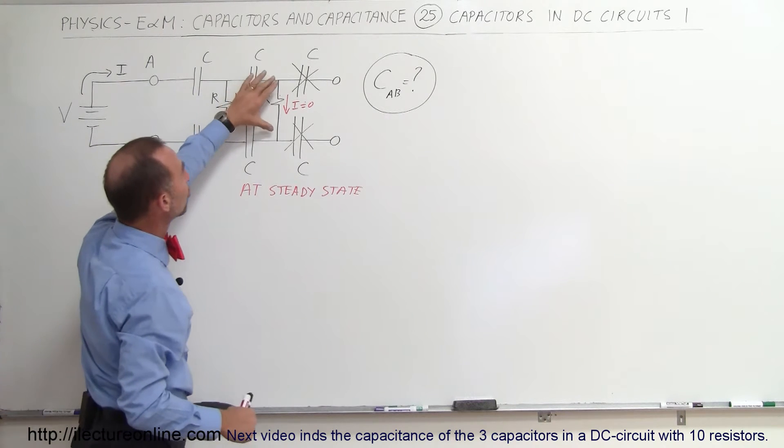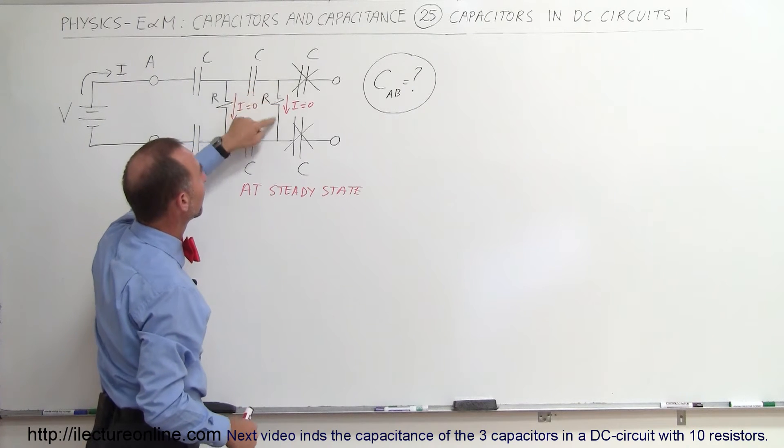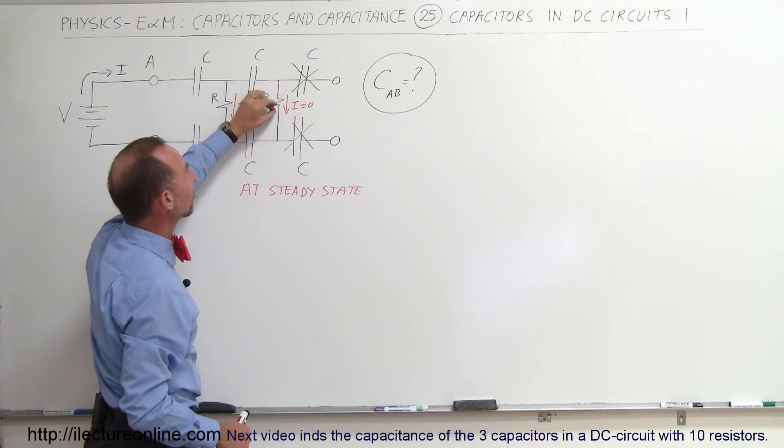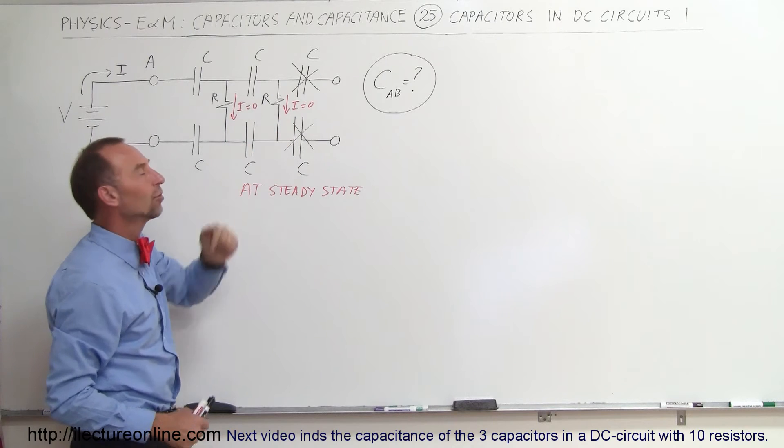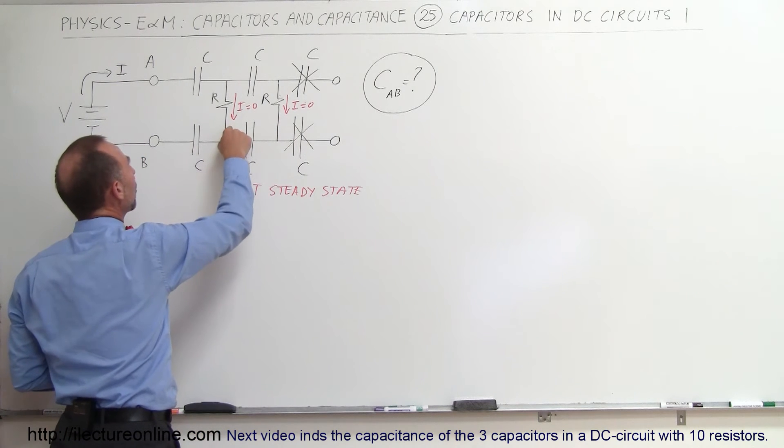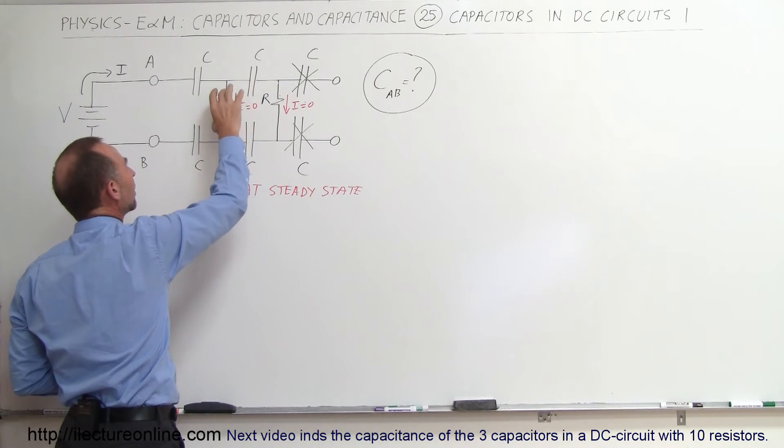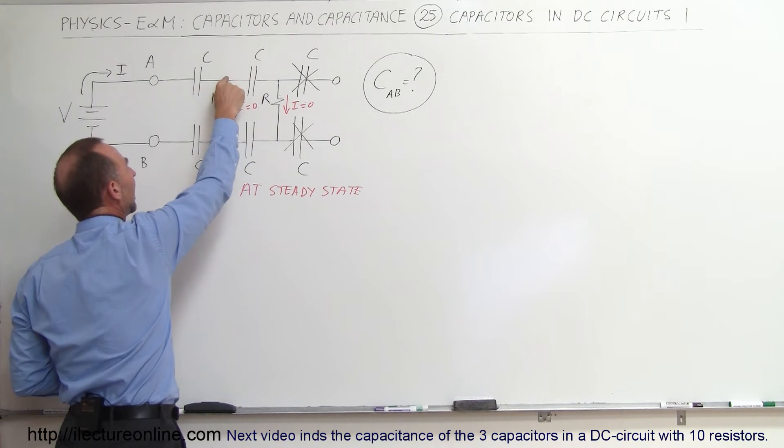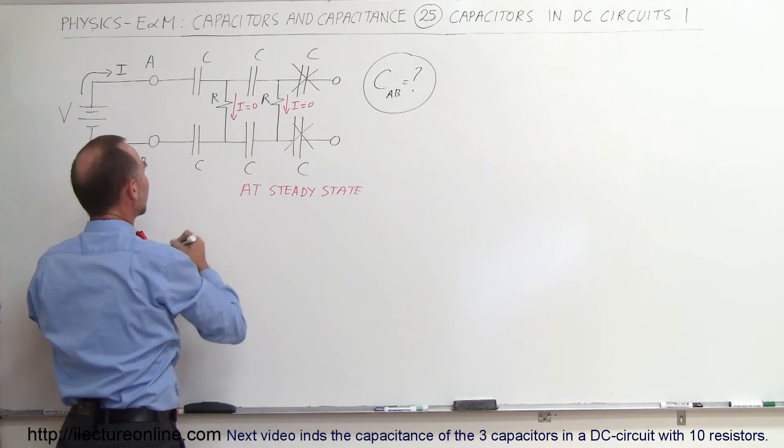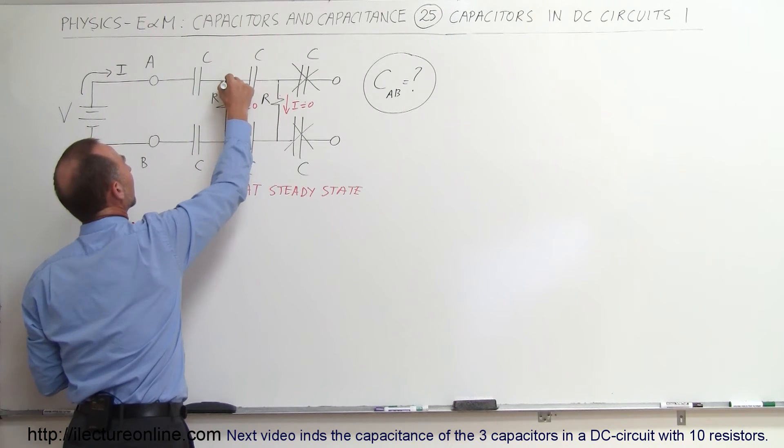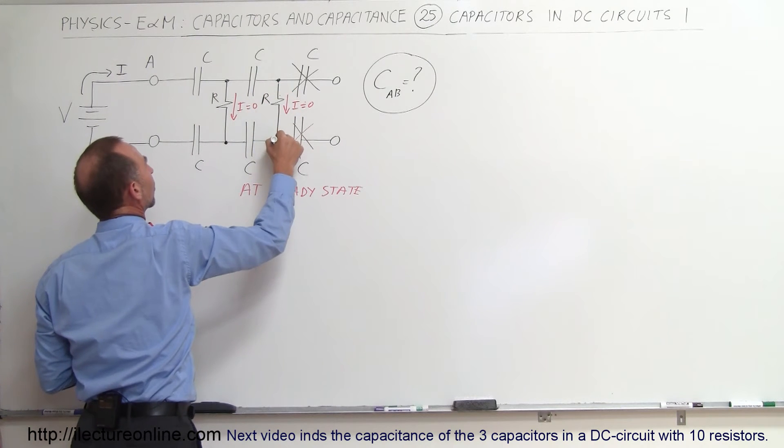So if there's no current flowing between this point and this point, this is essentially the same point as this, it is as if that resistor isn't there. And over here as well, if there's no current flowing here, it is as if this resistance isn't there, and this point is the same as that point. So those two points are the same, and those two points are the same in the circuit.